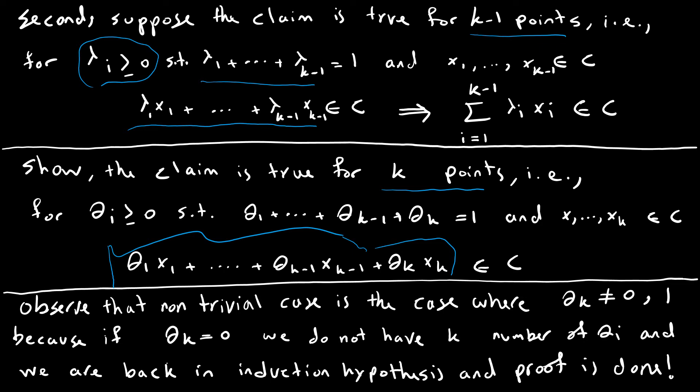The other trivial case is the case where θ_k equals 1. When θ_k equals 1, the other coefficients are 0. And we know θ_k times x_k is just x_k. And we just showed x_k is a point in C. And then we're done.